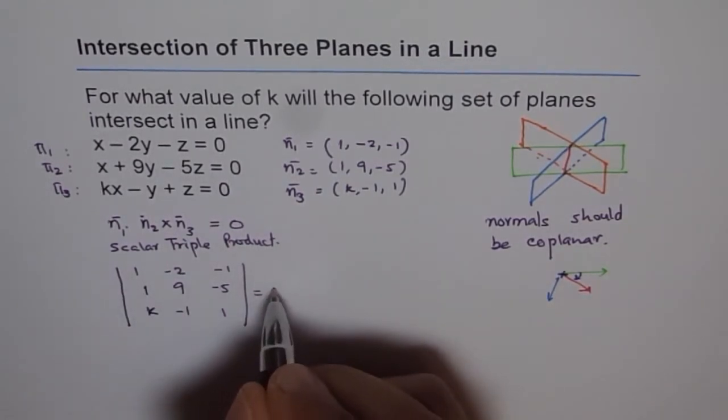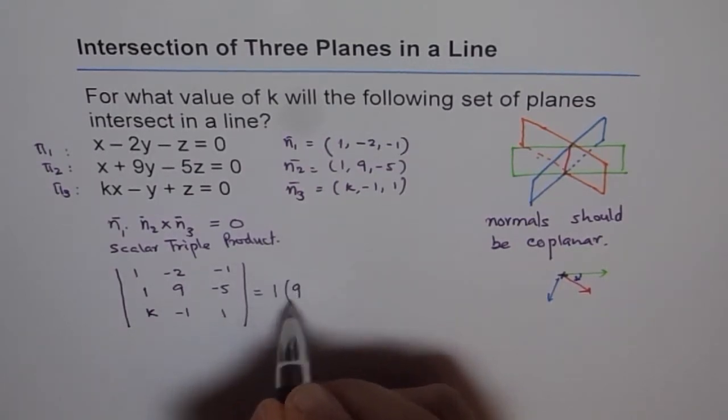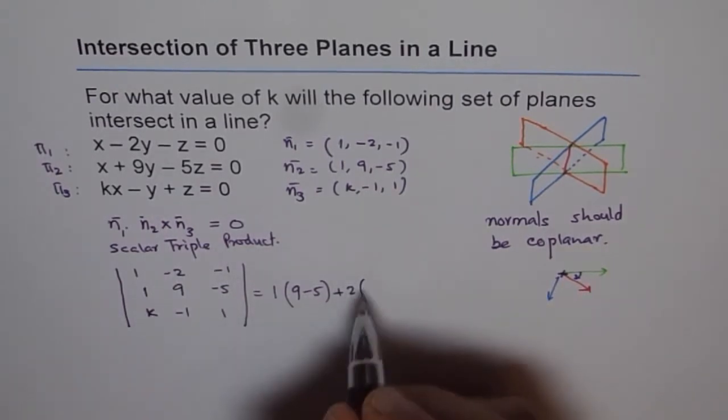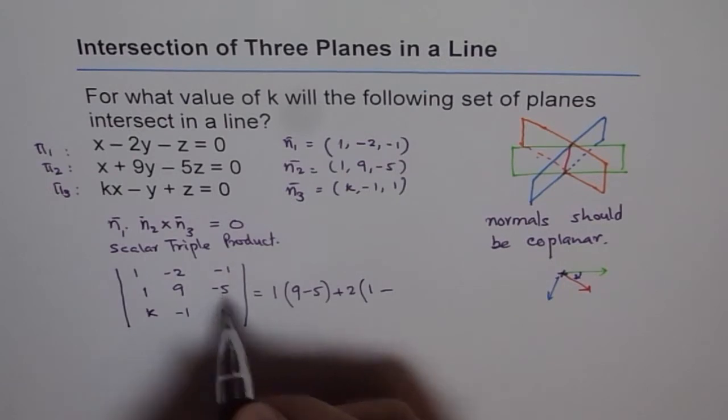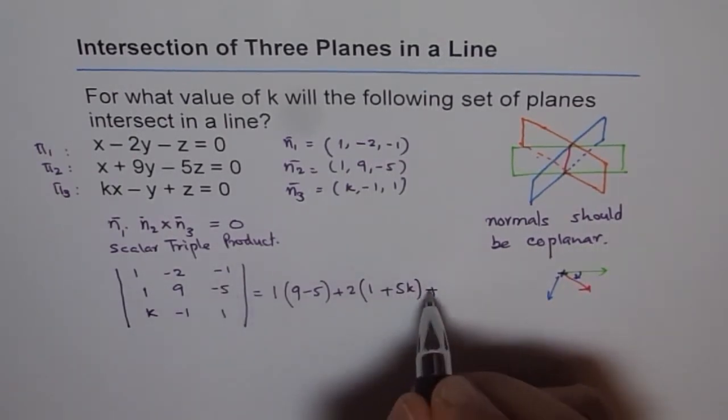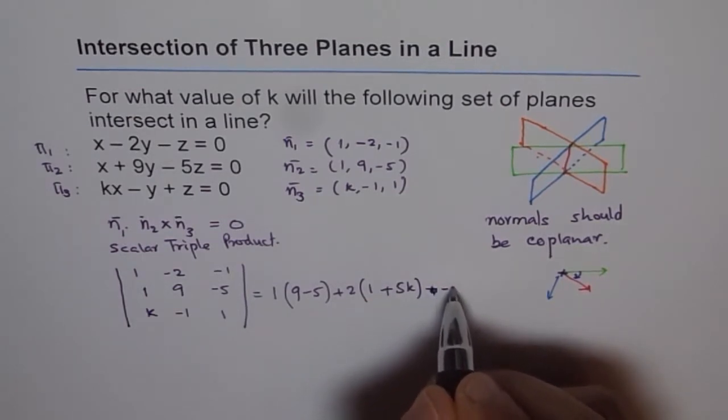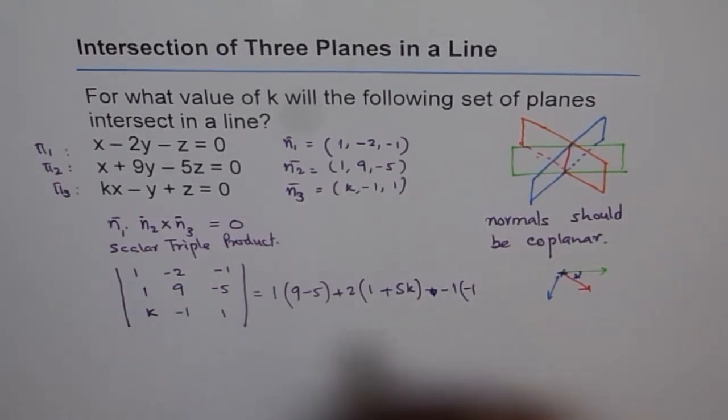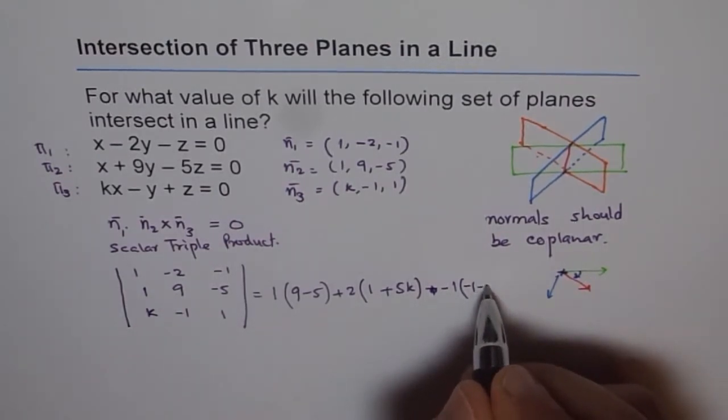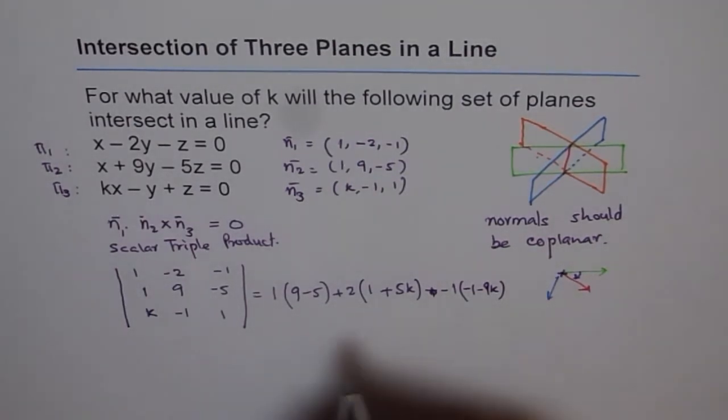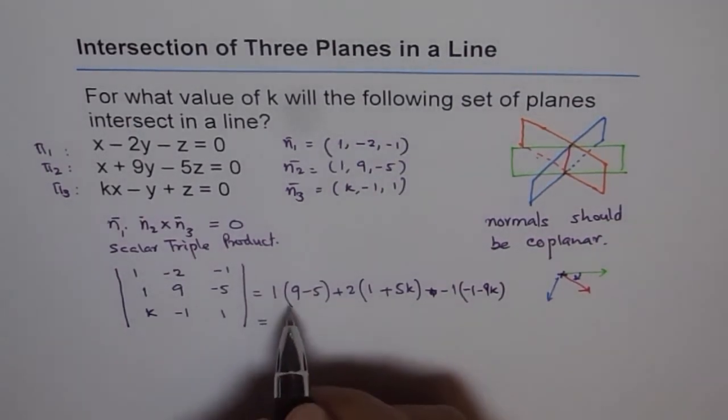So we do 1 and then we get 9 minus 5, and -2 makes it plus, 1 minus makes it plus 5k plus, -1 will make it minus, 1 times, let me write, 1, -1 and this is -k, 9k. So, -9k.